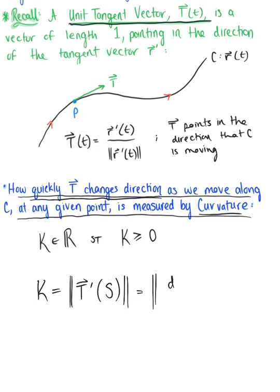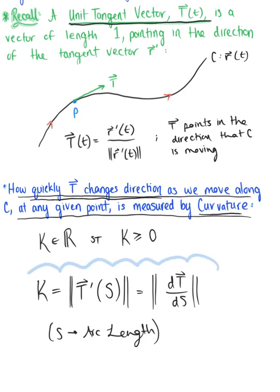We could also use differential notation, where s is the arc length. So the curvature is the magnitude — a non-negative scalar — defined as the rate at which the unit tangent vector changes with respect to arc length. This is our intuitive understanding of curvature. Now let's use this intuitive definition to help us appreciate what the different cases of curvature tell us about the curve.